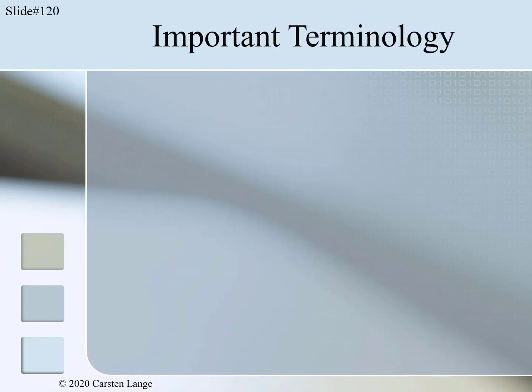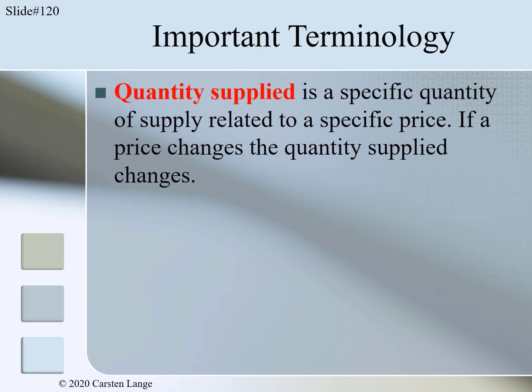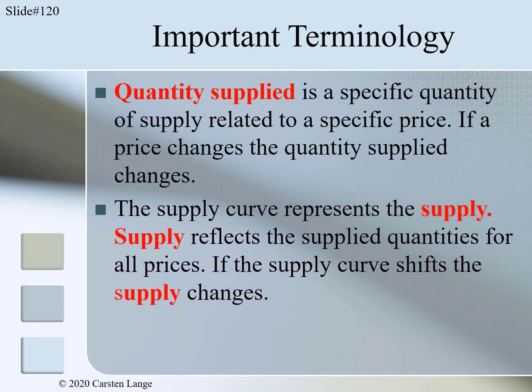Before we apply this scheme to an improvement in technology, I want to introduce some important terminology. Quantity supplied is a specific quantity of supply related to a specific price. If a price changes, the quantity supplied changes — you would find different supplied quantities at the horizontal axis of the supply diagram. The supply curve represents the supply, which reflects the supplied quantities for all prices. If the supply curve shifts, that means the supply changes.